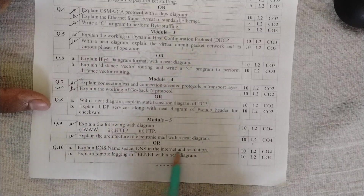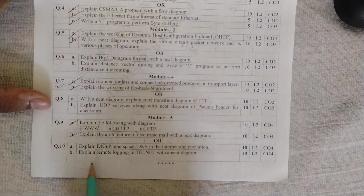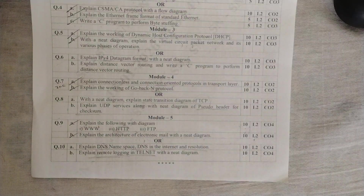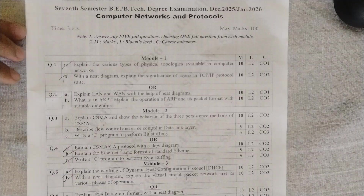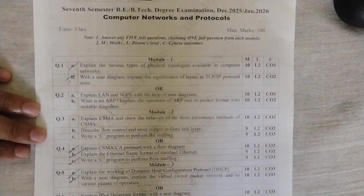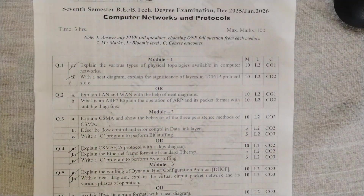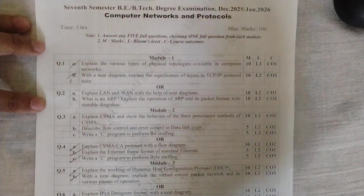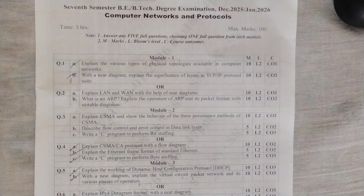Question 10A asked to explain DNS namespace, DNS in the internet, and resolution — the same question I gave in my passing package. Question 10B asked to explain remote login using Telnet with a neat diagram — also covered in my passing package. Overall, most questions were in my passing package, questions were repeated, and the paper was easy. The only negative was insufficient time, as 70 to 80% of students who attempted the exam likely spent too long on 1A and 1B.